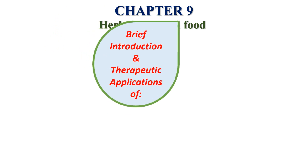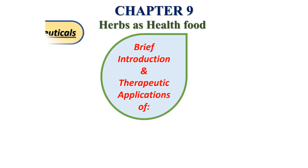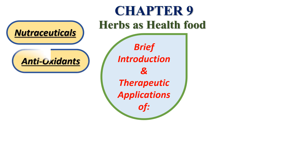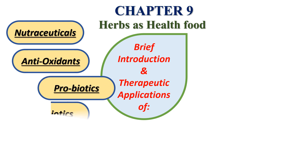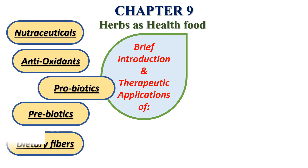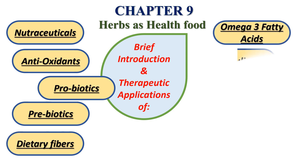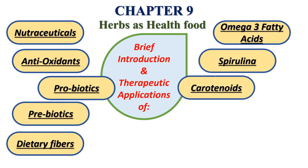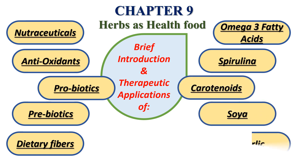Chapter nine is herbs as health food. This chapter is related to various pharmaceutical and nutraceutical products entering the healthy food market. It provides a brief introduction and therapeutic applications of nutraceuticals, antioxidants, probiotics, prebiotics, dietary fibers, omega-3 fatty acids, spirulina, carotenoids, soya, and garlic. These are the herbs used as healthy food.